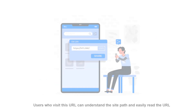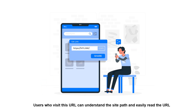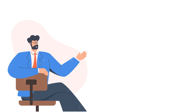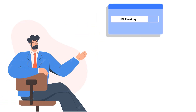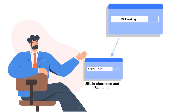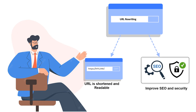Now, all the users who visit this URL can understand the site path and easily read the URL. In this way, by utilizing the features of URL rewriting, a URL is shortened and changed into something meaningful, which can be readable and help to improve SEO and security.